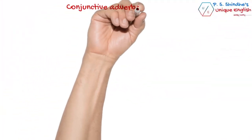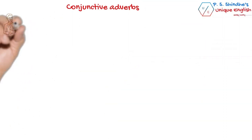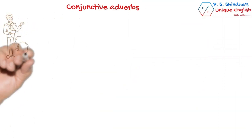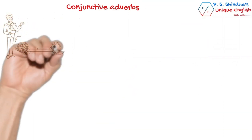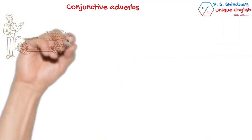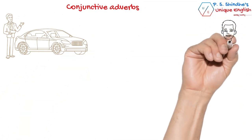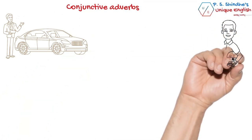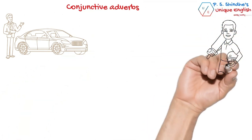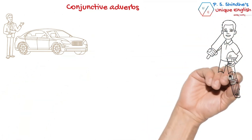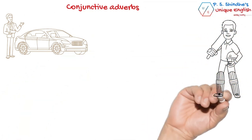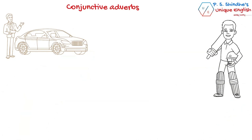Conjunctive adverbs join two independent clauses, whereas coordinating conjunctions can join words, phrases, or clauses. One more important feature of conjunctive adverbs is that they begin independent clauses.